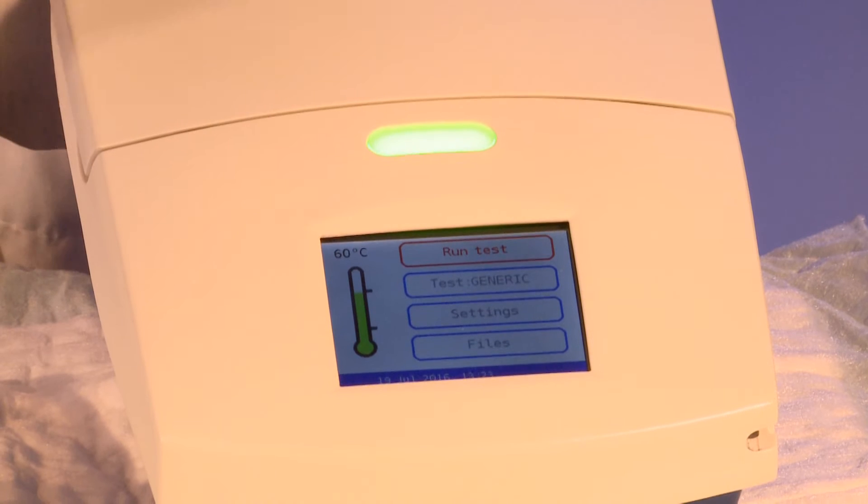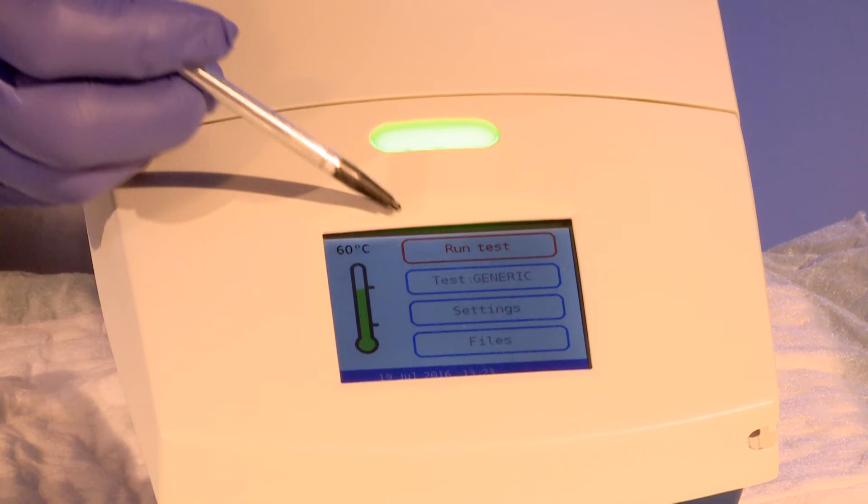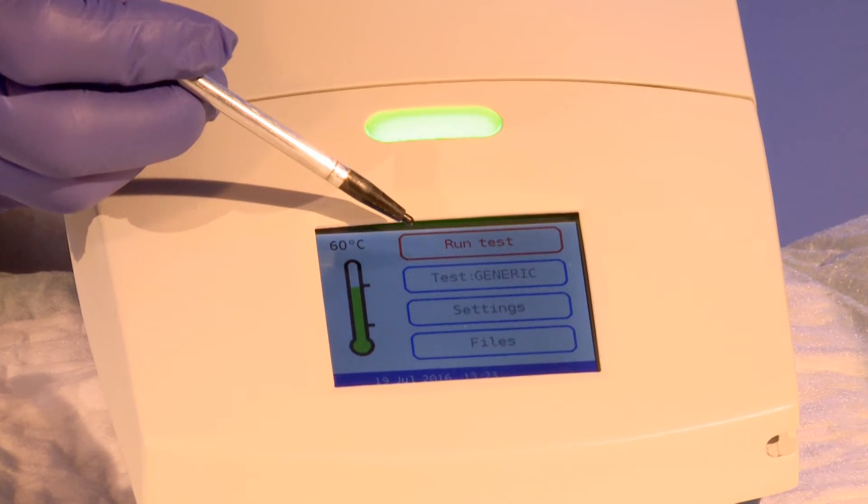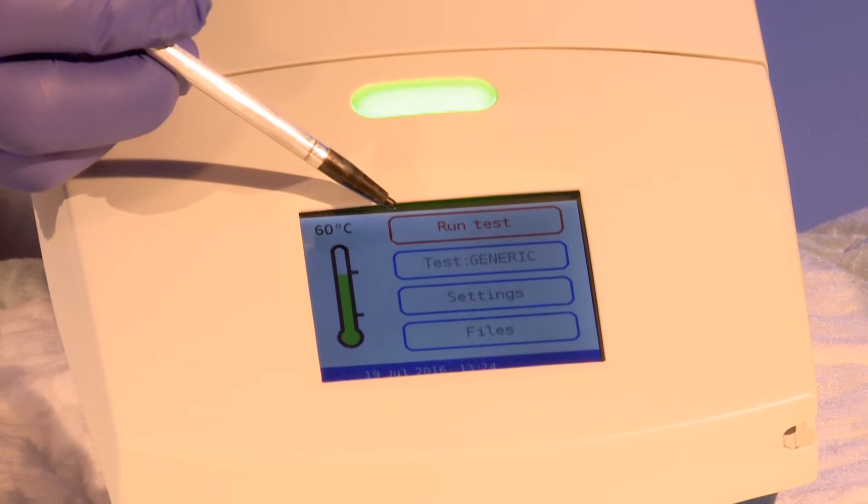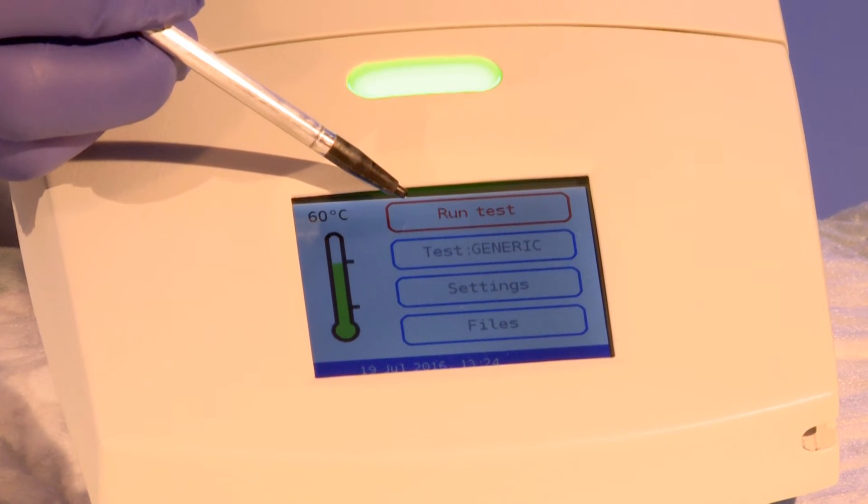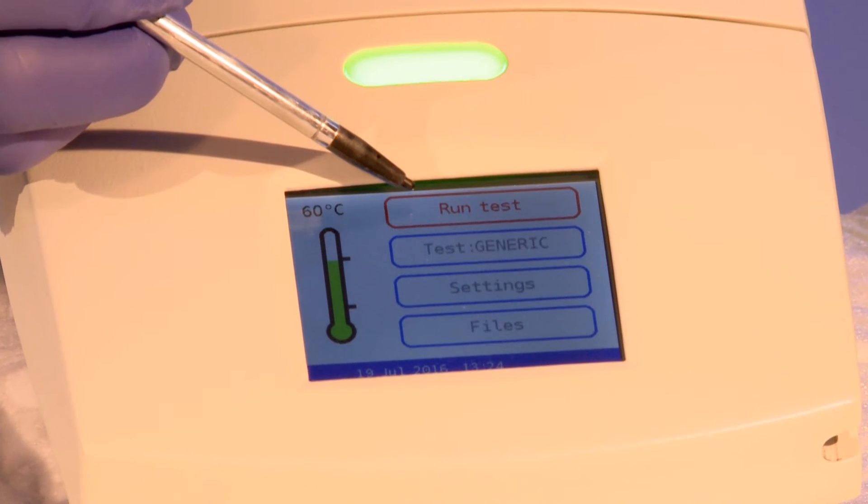Once the temperature of the plate has reached the target temperature, the message will change to Run Test and the indicator light will change to green. The thermometer on the touch screen will become green and the temperature will appear above the thermometer.